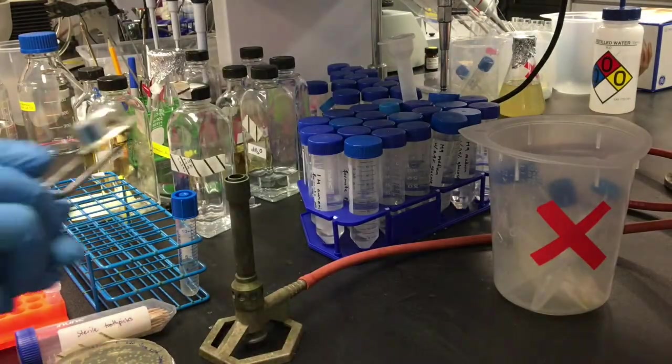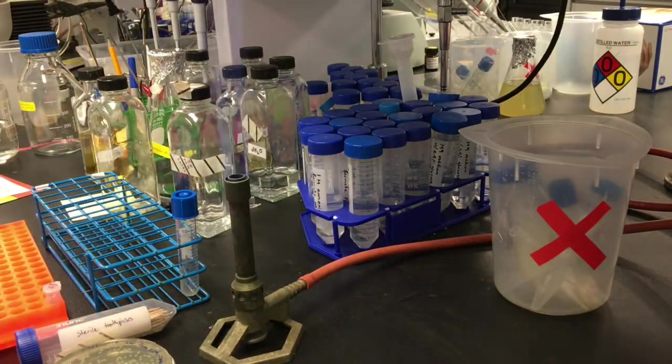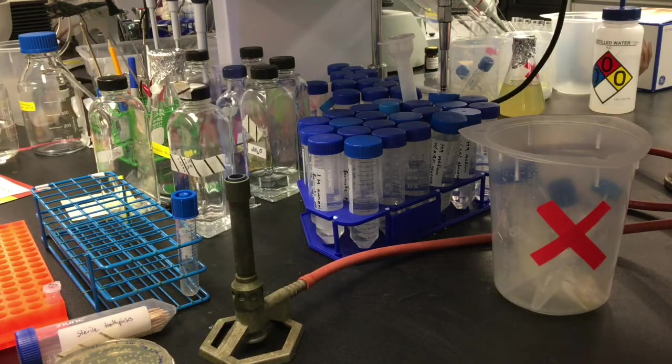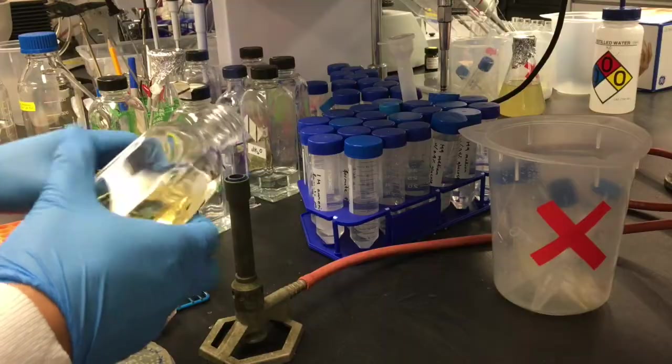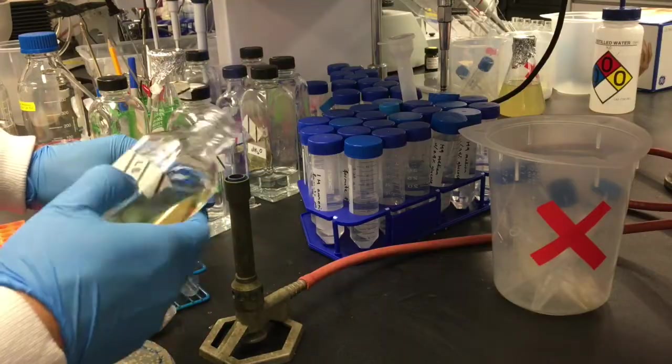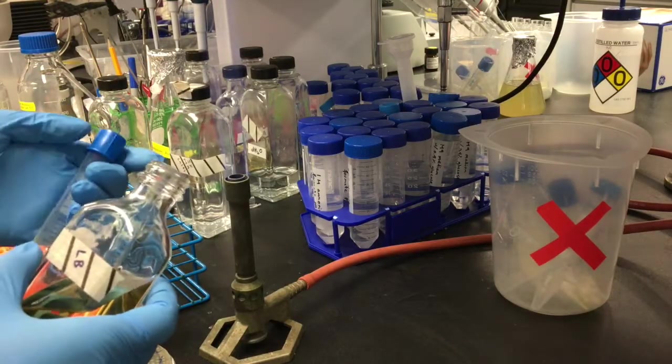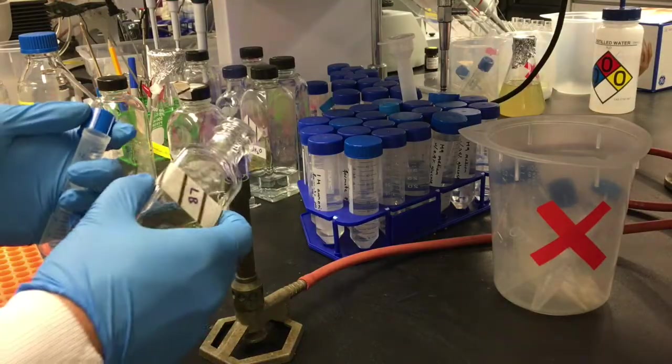The next step is to inoculate liquid cultures, assuming that you already have your expression strain transformed with a plasmid encoding your recombinant protein on an agar plate. We'll start with a small starter culture that we will grow overnight, and afterwards we'll use that culture to inoculate a larger expression culture.